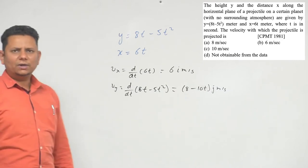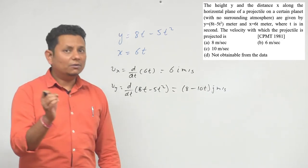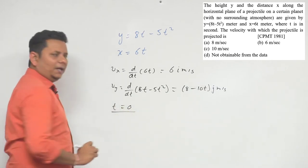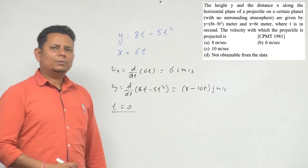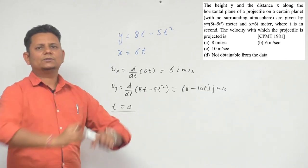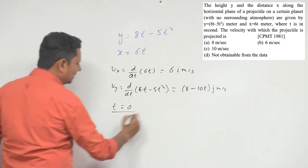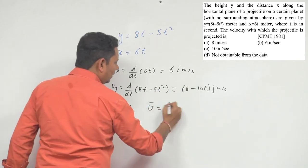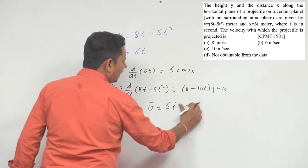These are your velocities in general. Now we have to find the velocity at the point of launch. At the point of launch, let t be equal to zero. At t equals zero, we'll get the launch time velocity because that is the time when we launched it.